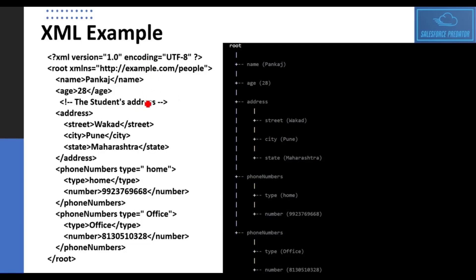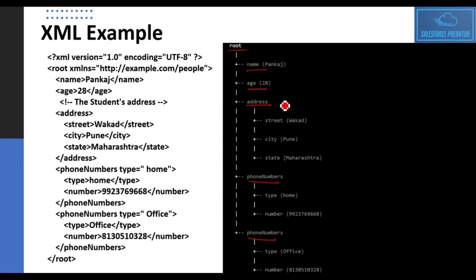If you represent this XML data in the form of a tree, it will have a root element at the top, with child nodes like name and age, and then further child nodes under the address node as well. That is how XML data is represented as a tree structure.